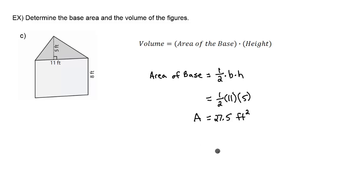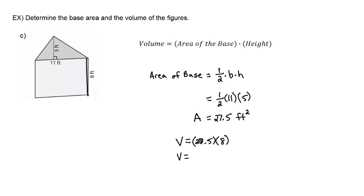Now we find the volume by taking the area of the base, 27.5, and multiplying it by the height. The prism goes from bottom to top — 8 feet. So 27.5 times 8 gives us 220 feet cubed.